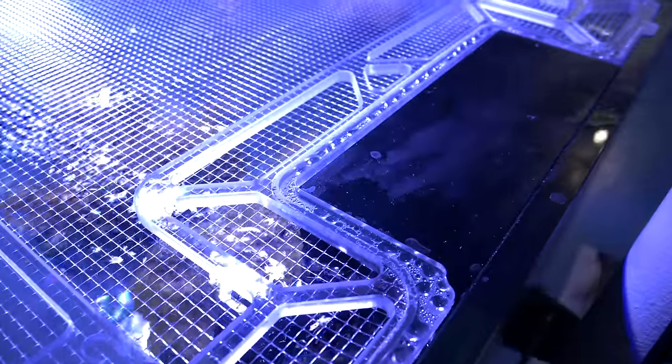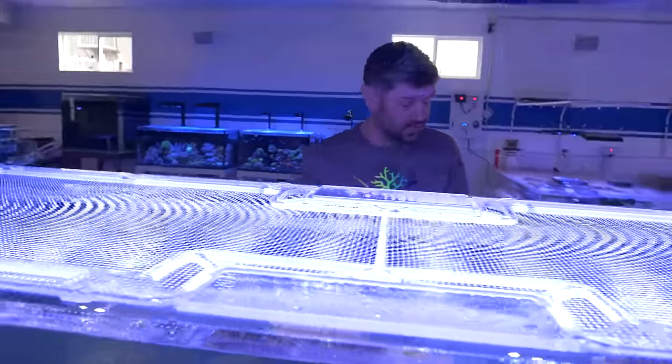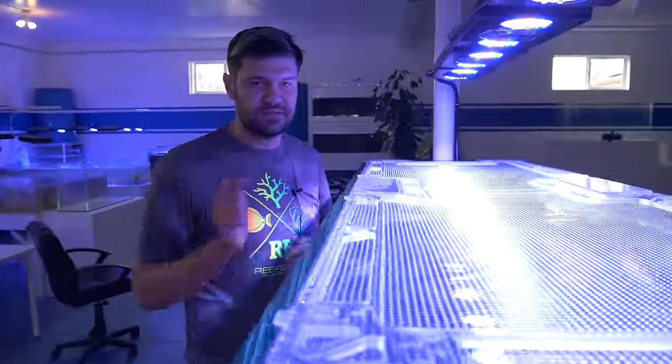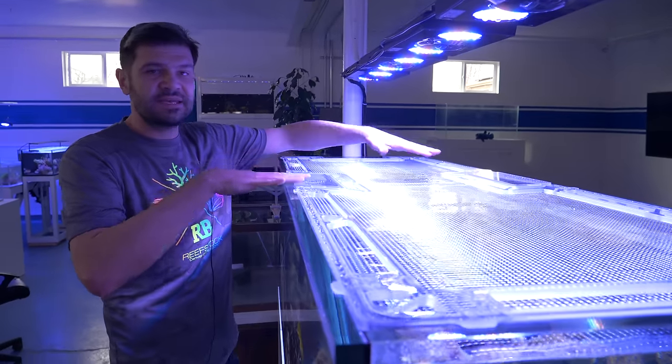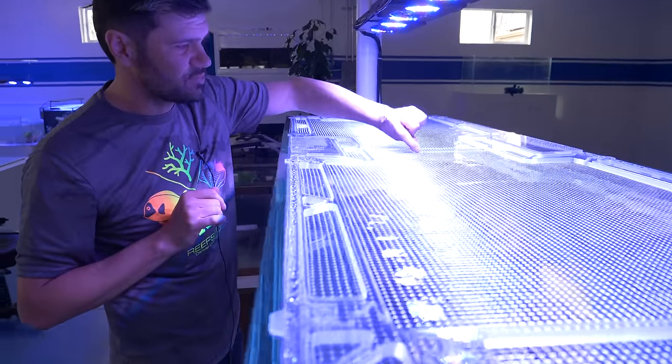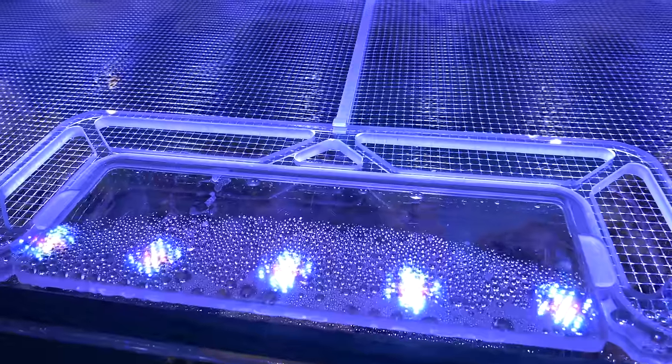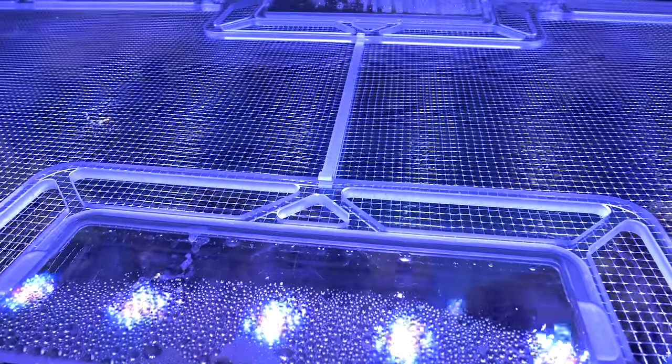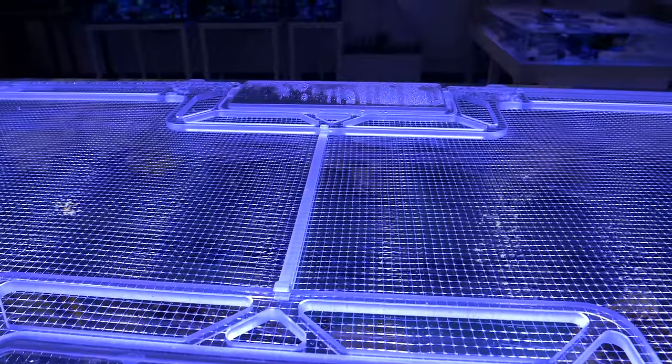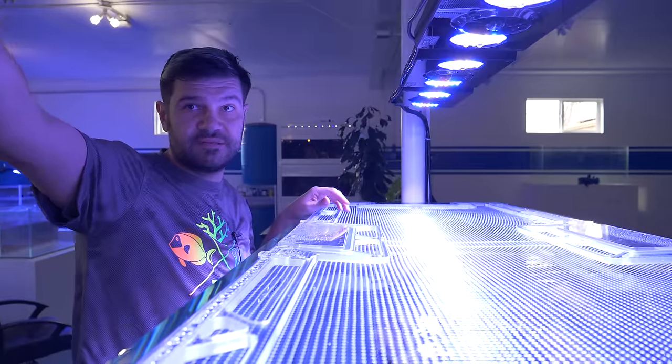So one final thing to know about these longer Clearview lids is in order to keep them from sagging in the center, because there's not that much material right here, they have these braces right here that basically push it apart. On this particular one you can see just a little bit of sag but this center brace is not glued in, they come out.